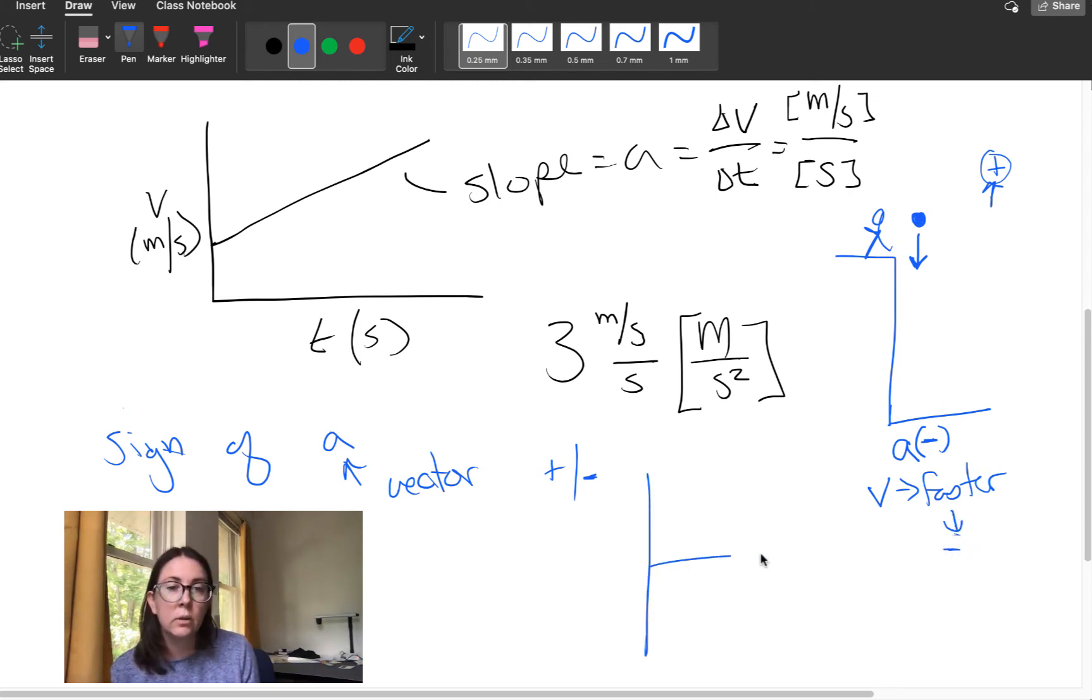So what would that look like? Here's our velocity versus time graph of this object. If my initial velocity is zero, I'm going to write this in red. My initial velocity is zero.